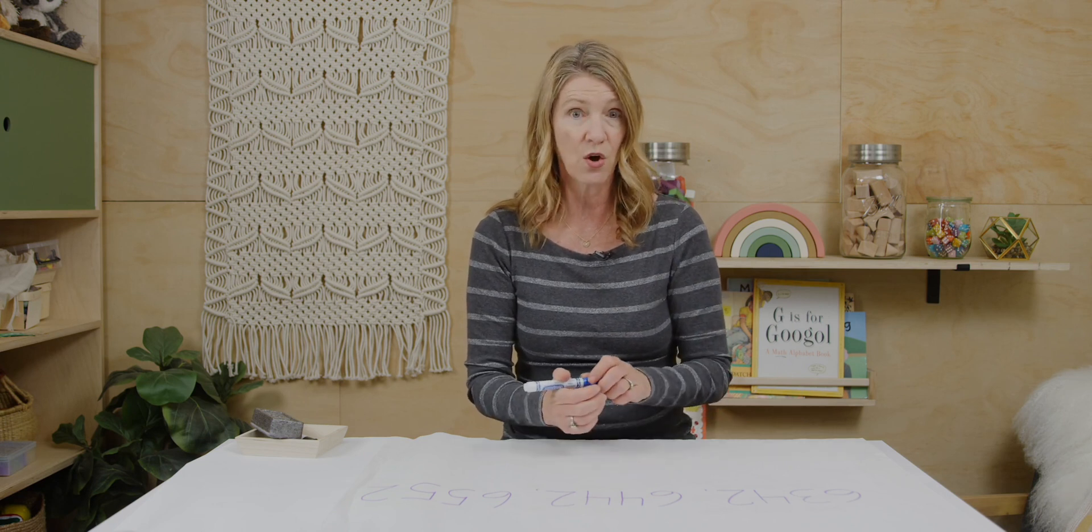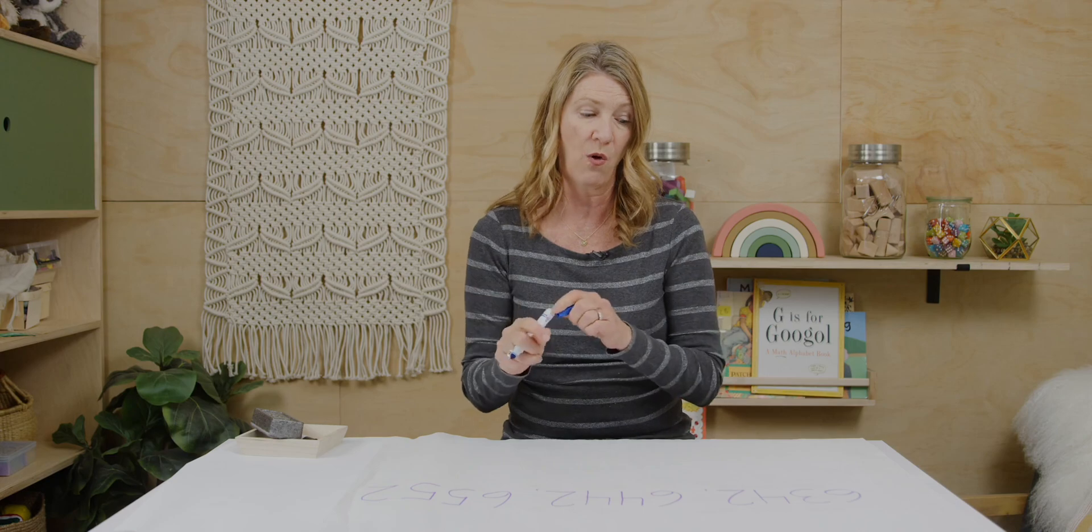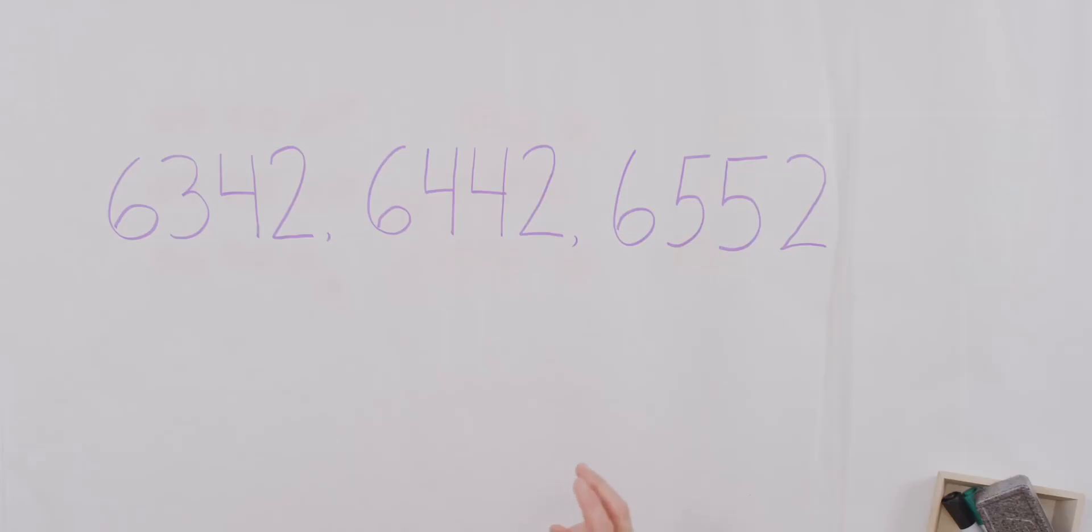Let's read these numbers aloud. 6,342, 6,442, 6,552. How do we know which one of these numbers is greater than the others? Well, in this case, they all are in the 1,000s, and the digit is 6, and it's the same.